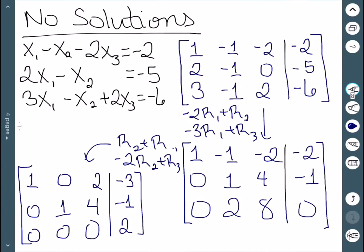For the third row, negative 2 times 0 plus 0 is 0. Negative 2 times 1 plus 2 is 0. Negative 2 times 4 plus 8 is 0. And negative 2 times negative 1 plus 2 is 2.